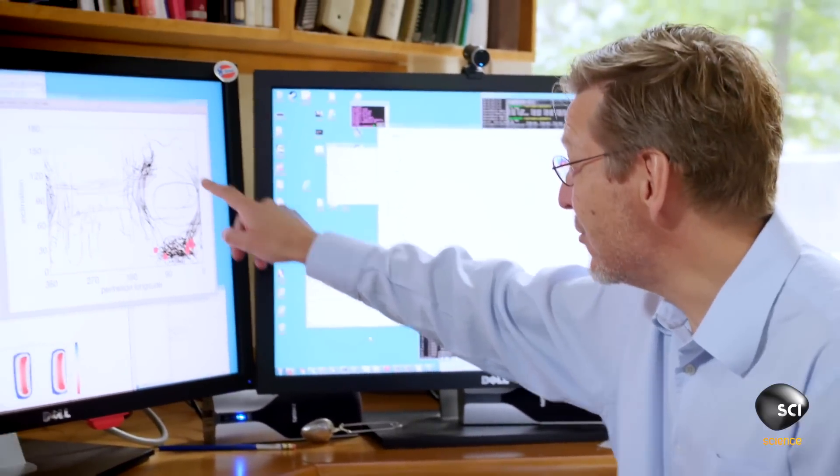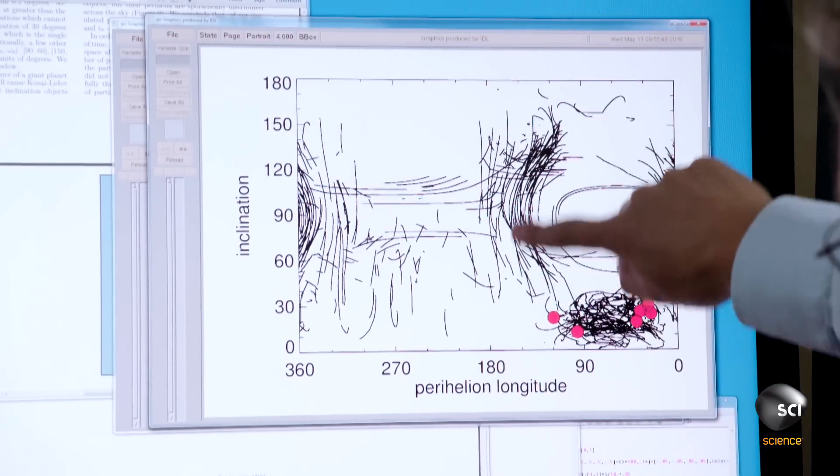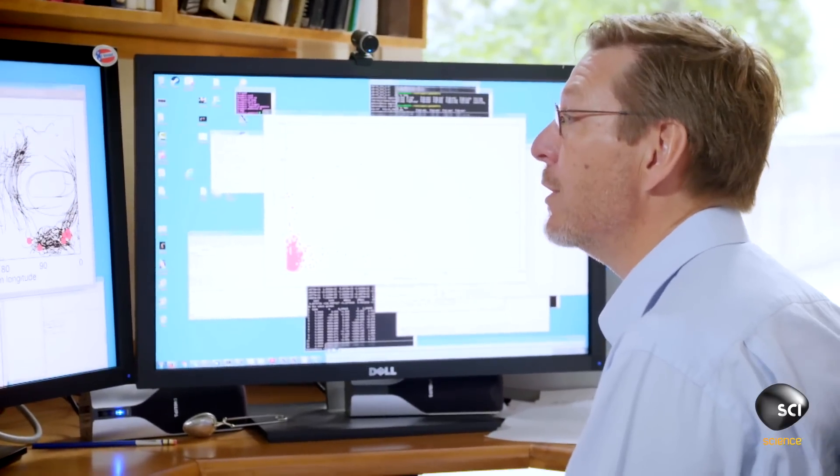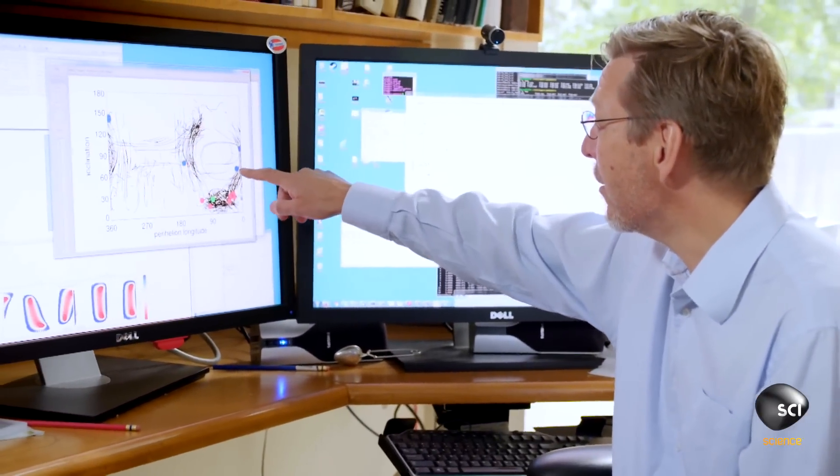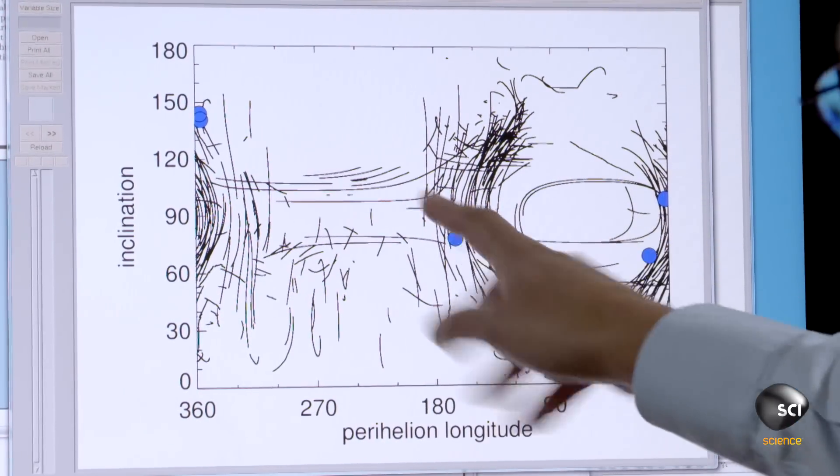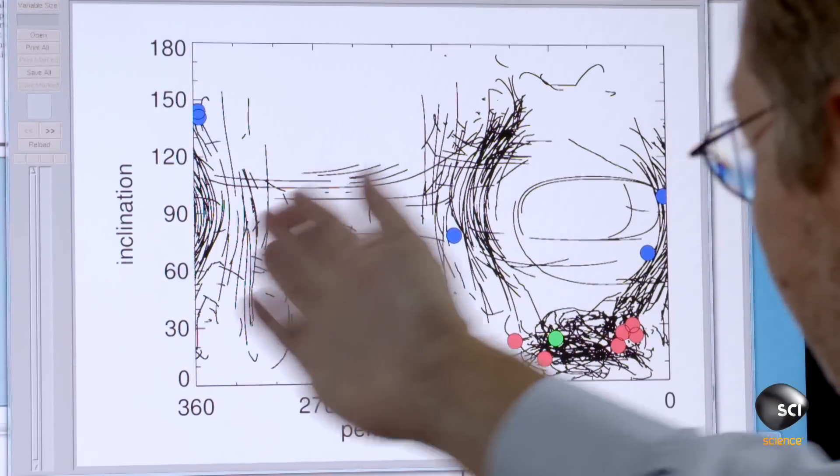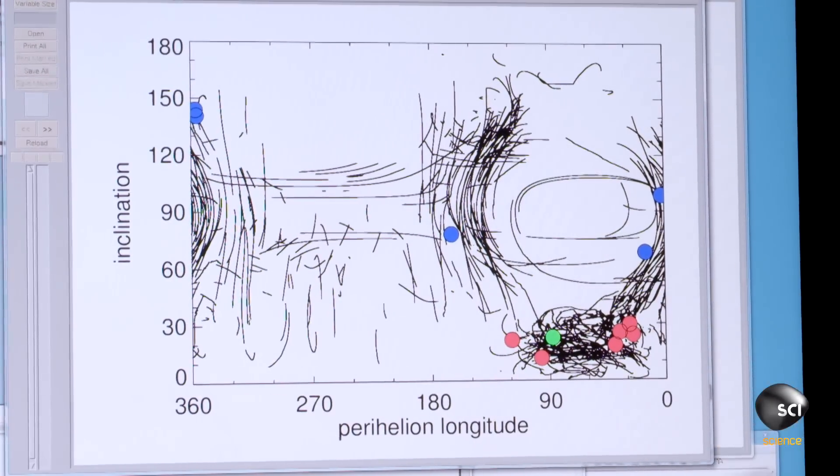The theory says they should be right here and right here. And I did the calculations very quickly to see where they were and brought them up. And there they are. One, two, three, four, five, right on these lines, exactly where we predicted they should be.